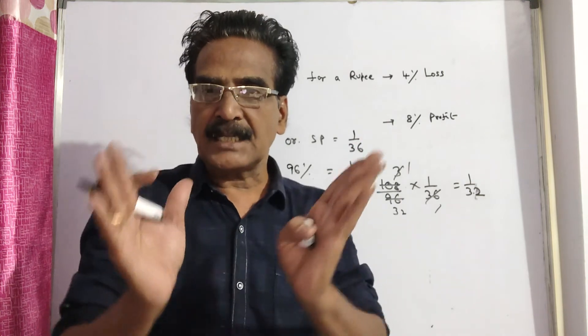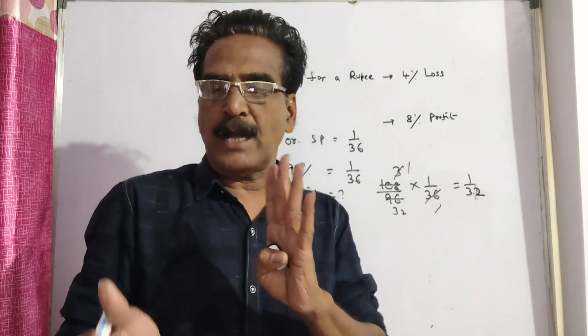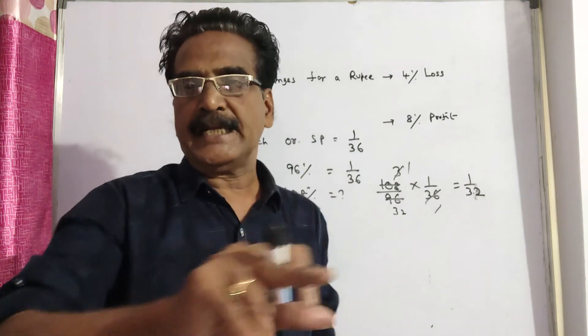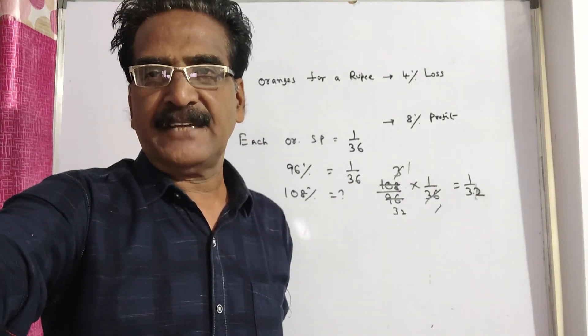1 by 32 means 32 oranges for a rupee. We have to sell 32 oranges for a rupee to get a profit of 8%. Okay friends, thank you.